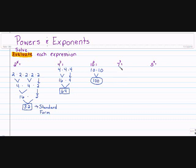7 cubed, or 7 to the third power, means 7 times 7 times 7. 7 times 7 is 49. Bring down the 7, multiply once again, and 49 times 7 is 343. In Standard Form.